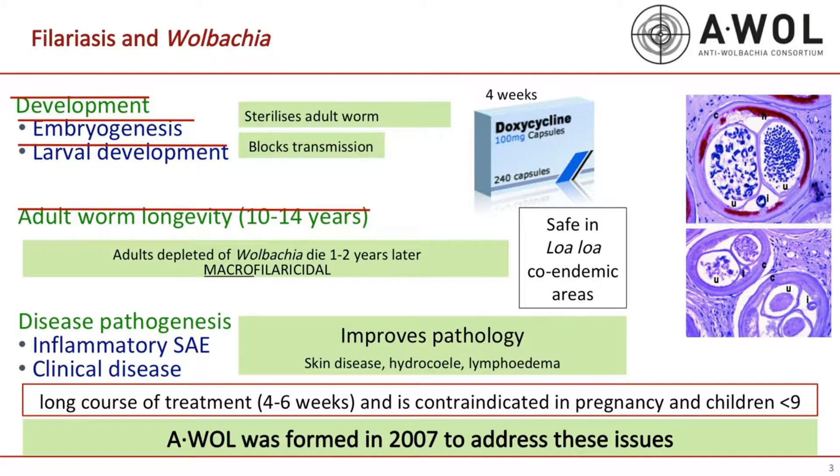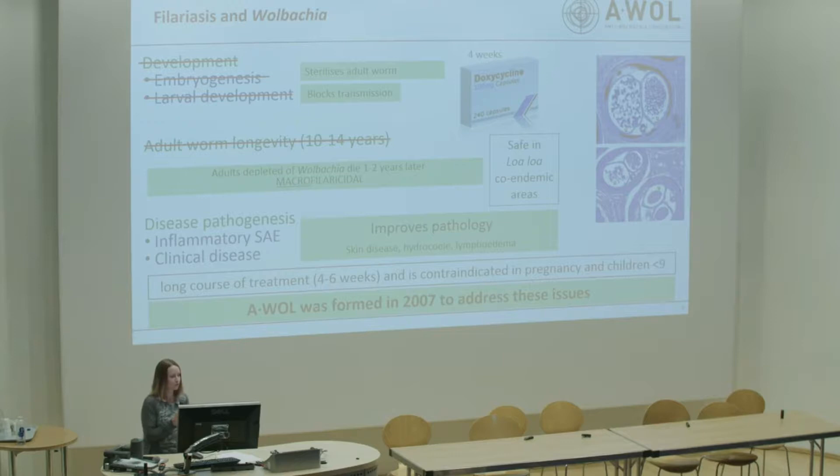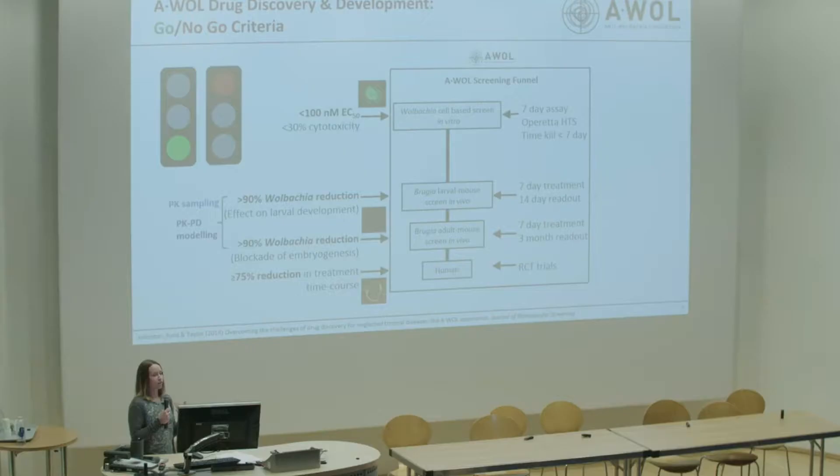But why can't we use it now? It's because of the long course of treatment — four to six weeks — and also doxycycline is contraindicated in pregnancy and children under nine. So the AWOL consortium — the Anti-Wolbachia Consortium — was formed in 2007 to address these issues. Ten years is a long time in research, so I'll just give you the highlights and explain why we feel this is important, and highlight some new work coming out of AWOL.